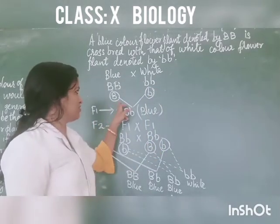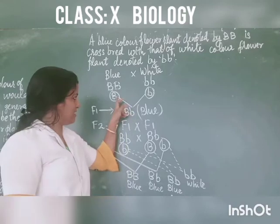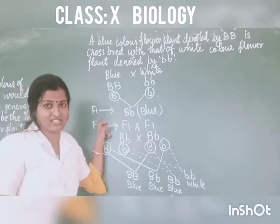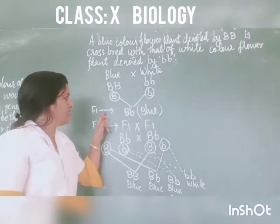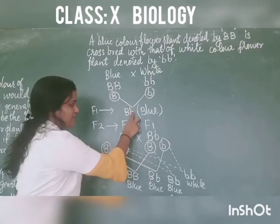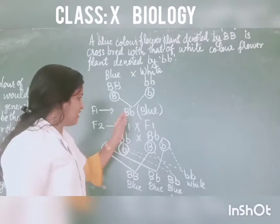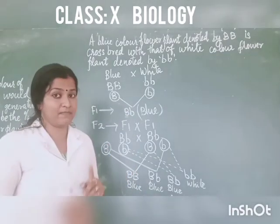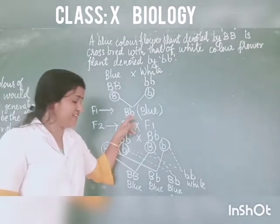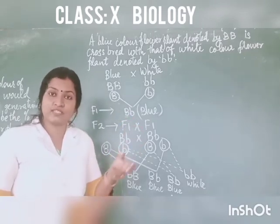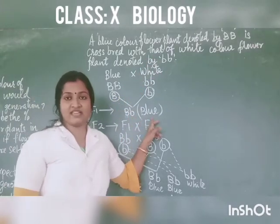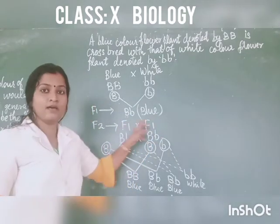So we cross capital BB with small bb. The result is the F1 generation — that is the first generation. So the result is capital B, small b. Here capital B is present. Capital B denotes the dominant character. If a dominant allele is there, the dominant character will be expressed in that generation. So the dominant character is blue. Therefore, the F1 generation plants have blue colored flowers.